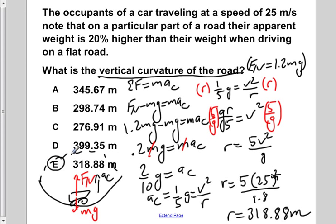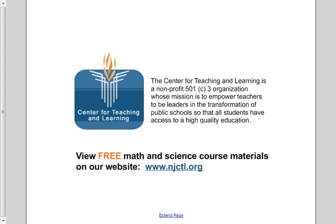So the vertical curvature of the road is 318.88 meters.